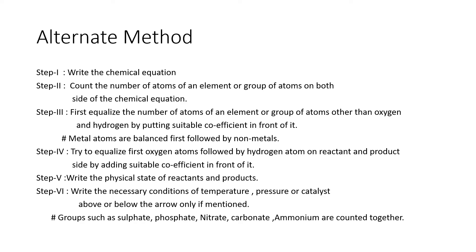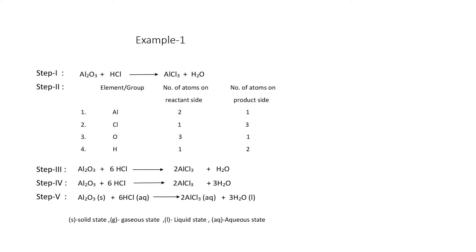In step five, mention the physical state of the reactants and products. There are basically three states — solid, liquid, and gas — and one more: aqueous state. In step six, write the necessary conditions like temperature, pressure, and catalyst above and below the arrow. Let us now take a suitable example to apply this method.